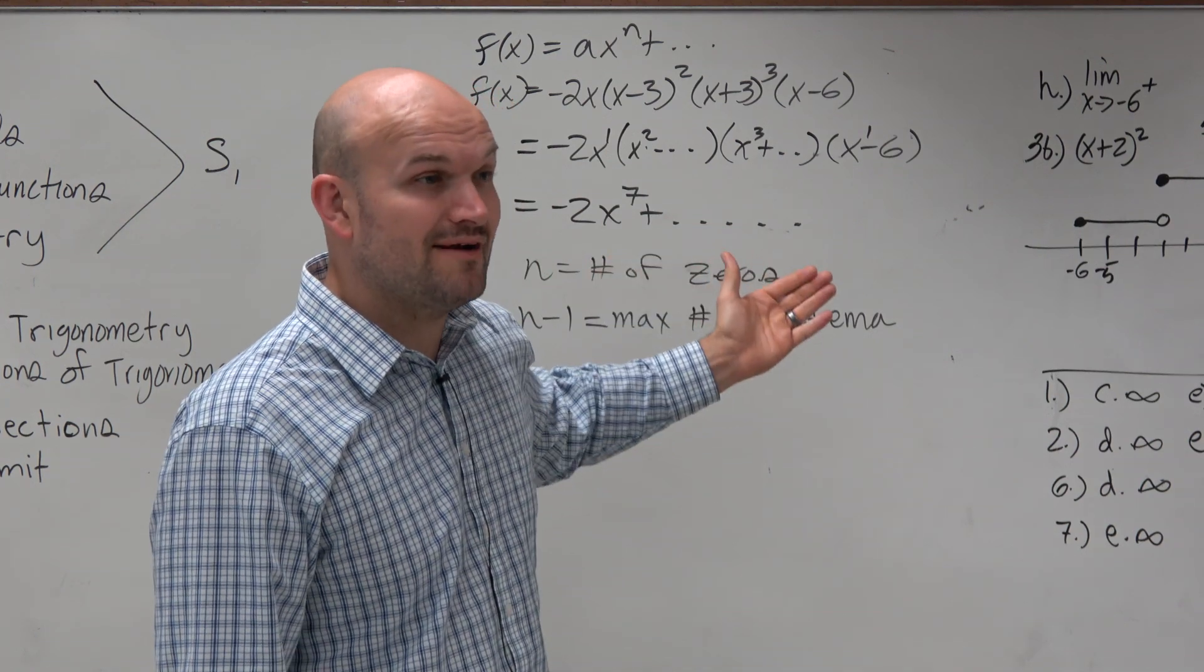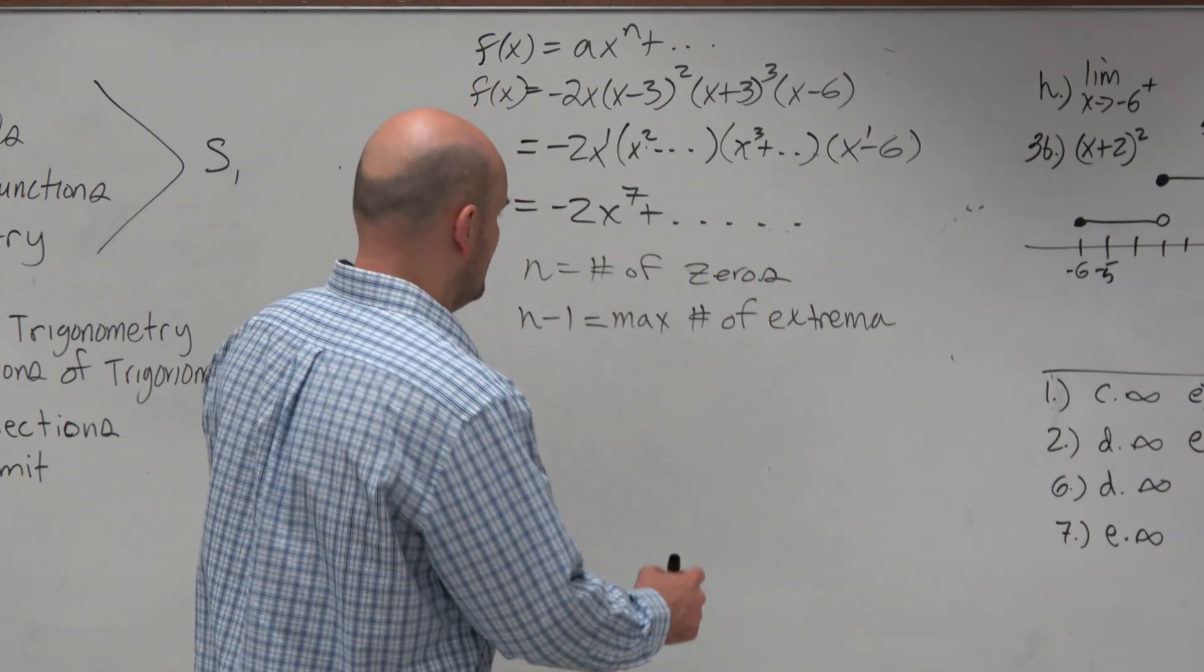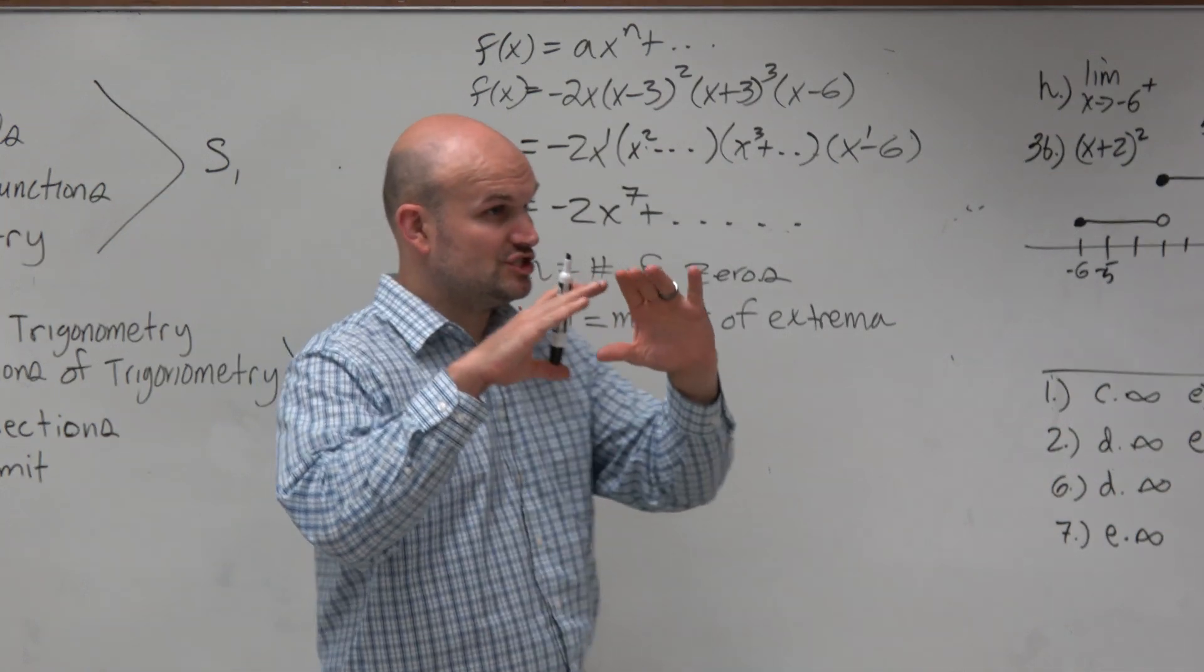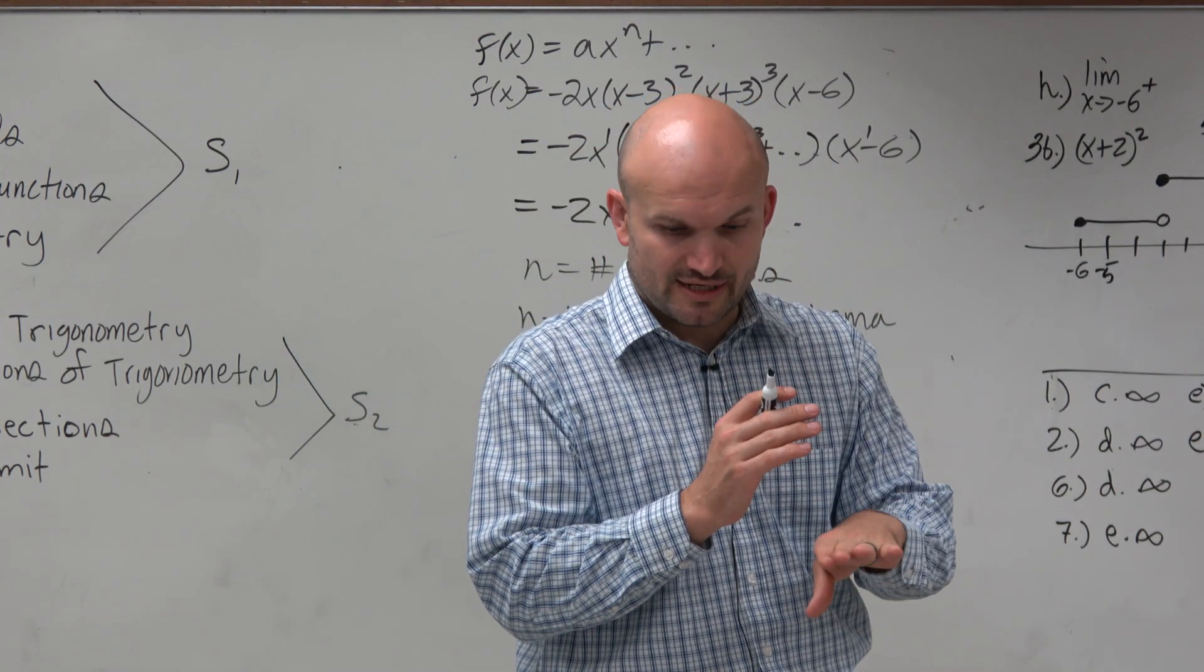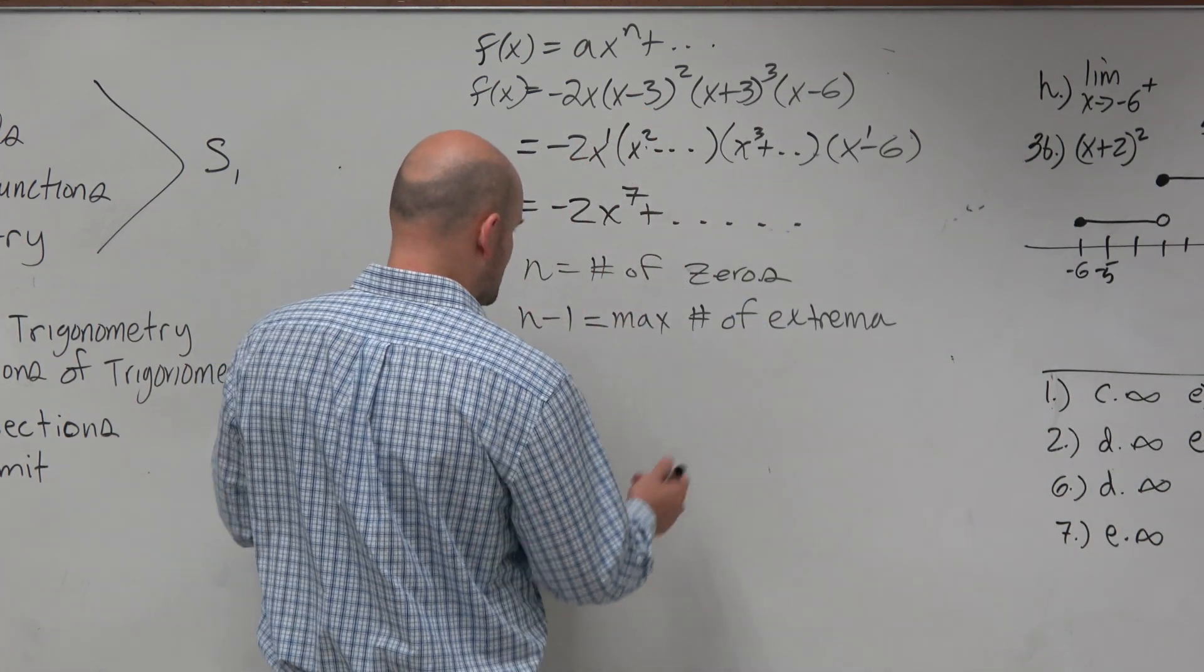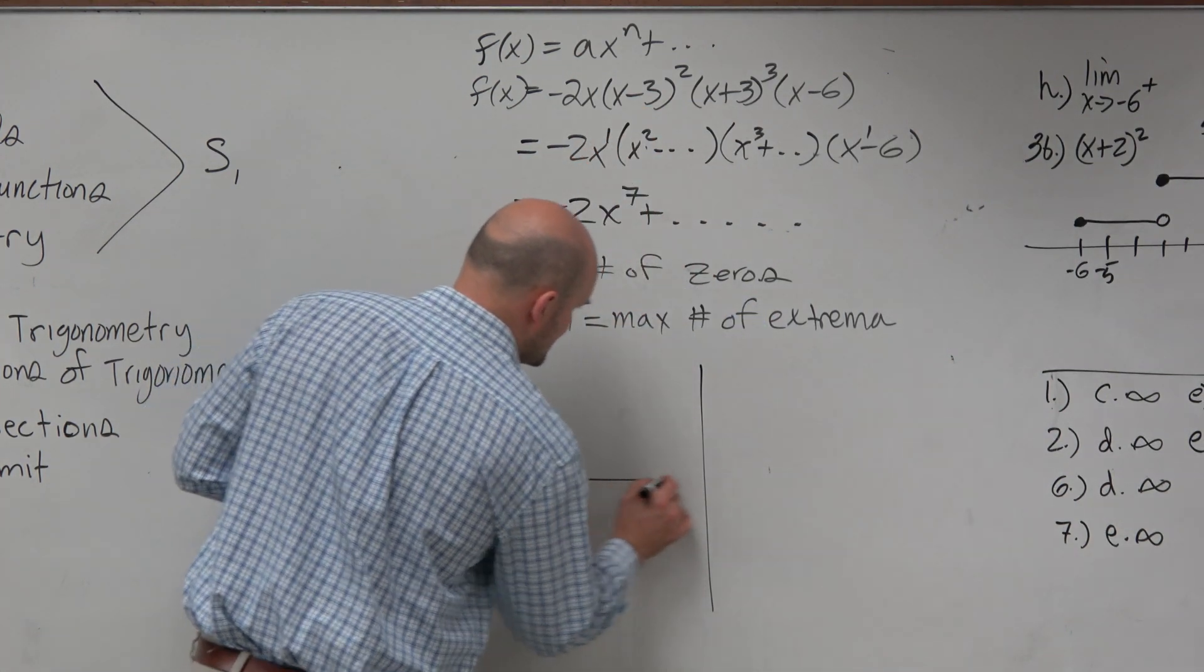We actually need to graph this problem to actually understand it. Because extrema is when we change from increasing to decreasing, or decreasing to increasing. So if we look at this, if we graph this, let's count our zeros, actually.